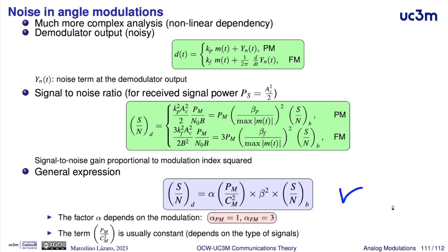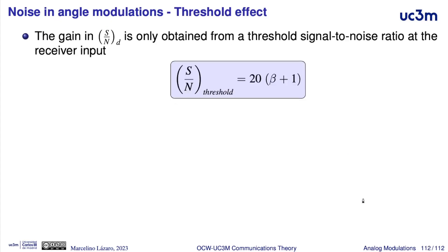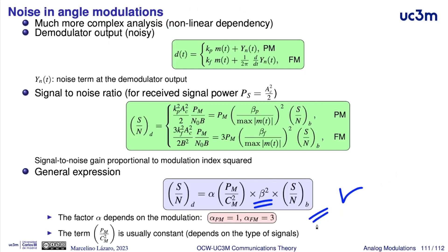Looking at this expression, the higher the value of the modulation index, the higher the signal-to-noise ratio, with a quadratic relationship. This result holds as long as the signal-to-noise ratio is above a given threshold, which depends on the modulation index and equals 20 times (the modulation index plus 1). Above this threshold, increasing the modulation index yields a significantly higher SNR — this is the main advantage of angle modulations: noise immunity for high values of the modulation index.